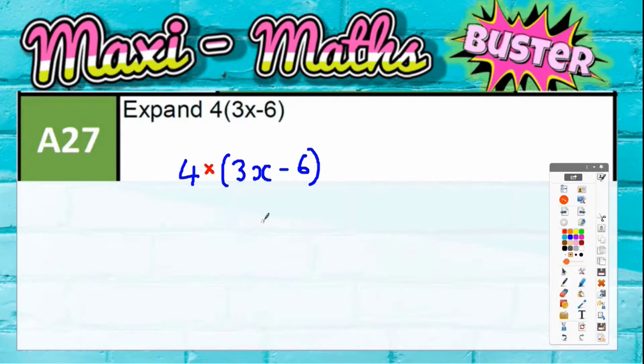In other words, everything in the bracket has to be multiplied by four. Some people like to do this straight off with no working out; some people like to draw a little grid. We'll look at both possible ways - we'll get the same answer whichever way we do it.